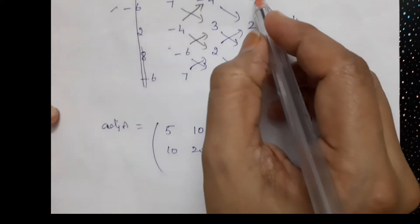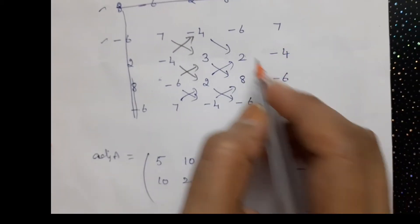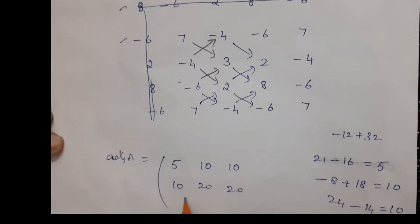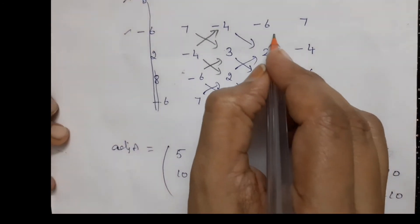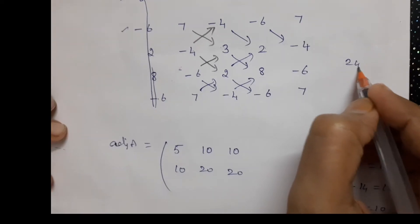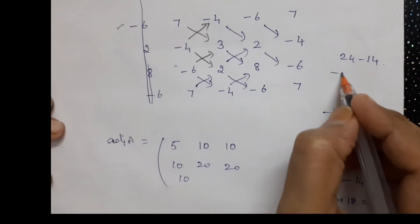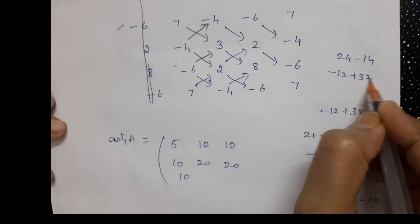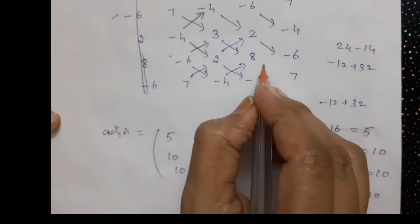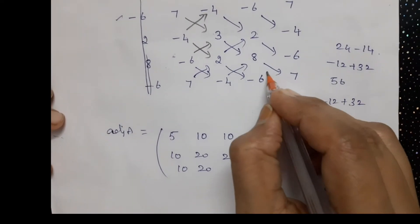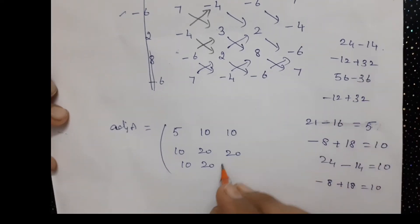Then for the third column, we proceed and write it in the third row. So 24 minus 14 is 10, and here -12 plus 32 is 20, and here 56 minus 36 is 20.